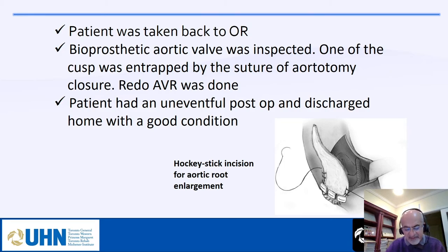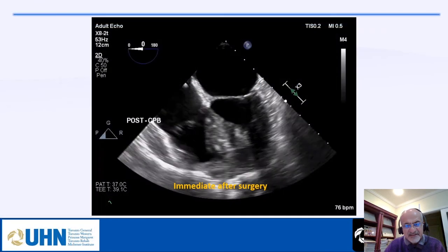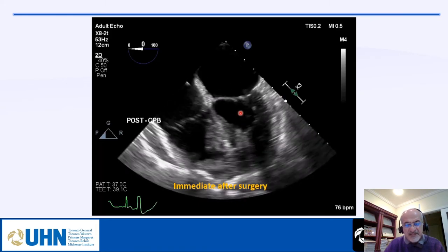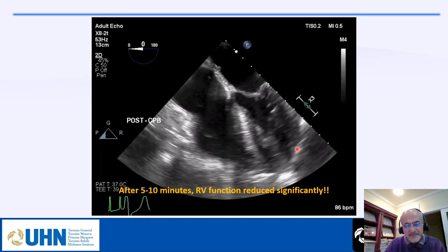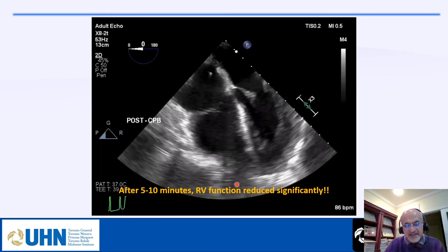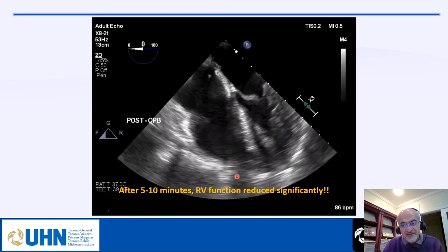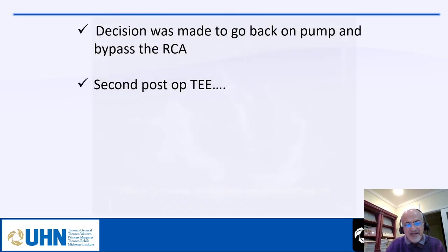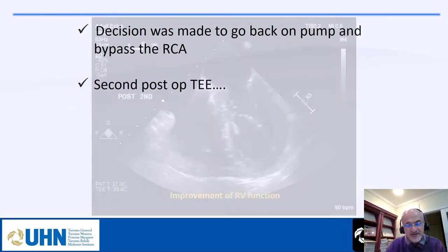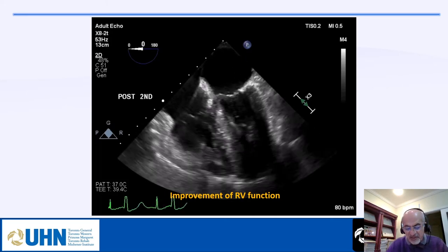Case three: a 55-year-old woman who had a bicuspid AVR for severe aortic stenosis. Immediately post-bypass, beside checking the valve, always look at LV and RV function — here RV was very good initially. After a couple of minutes, RV function deteriorated quickly and this was picked up very well by our fellow Rebecca, who alerted the surgeon that RV was severely compromised. The surgeon went back on bypass and performed a right coronary artery bypass — RCA had come off. RV function improved immediately. Always check RV and LV function alongside the valve assessment.